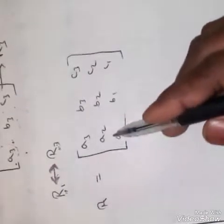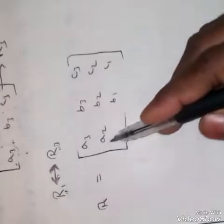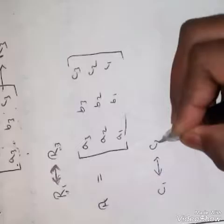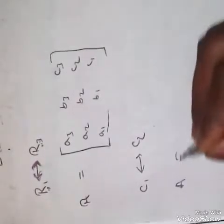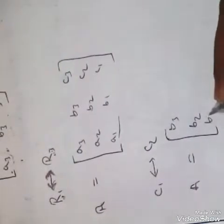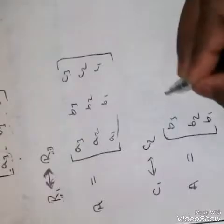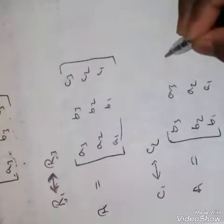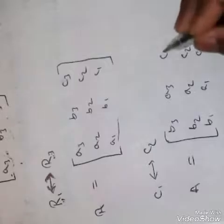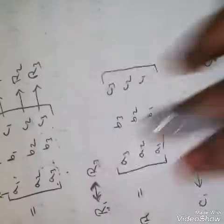We can also interchange columns. For example, interchanging C1 and C2: we write C1 ↔ C2. Then the first column becomes b1, b2, b3 and the second column becomes a1, a2, a3, while the third column C3 remains unchanged.